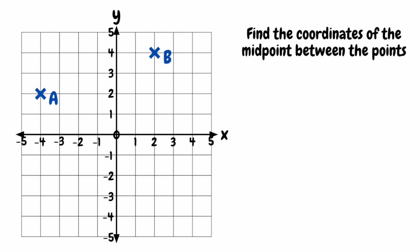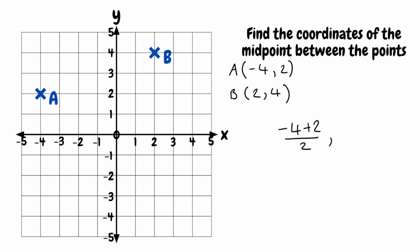OK, so for this first question, we want to find the midpoint between the points of A and B. Looking at our two points, we've got point A, which has coordinates negative 4, 2. And we have point B that has coordinates 2, 4. Starting with the x-coordinate of our midpoint, we're simply going to add our x-coordinates together. So that would be negative 4 plus 2, and then we're going to divide that by 2. And then we're going to add our y-coordinates together, so that would be 2 plus 4 divided by 2.